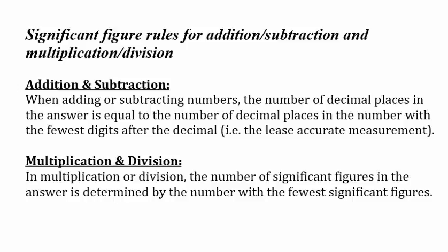When adding or subtracting, the number of decimal places in the answer is equal to the number of decimal places with the fewest digits after the decimal, or you could consider the least accurate measurement.